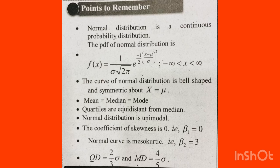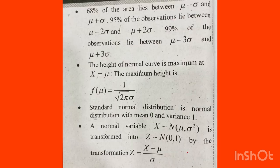The quartile deviation is 2 by 3 sigma, and the mean deviation is 4 by 5 sigma. These are the basic formulas you need to learn.